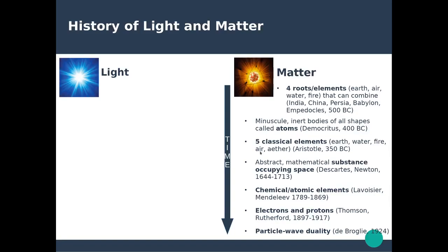Something worth mentioning is that those four elements — earth, water, fire and air — actually represent the four states of matter: earth is solids, water is liquid, air is gas and fire is plasma. Descartes later defined matter as an abstract mathematical substance that occupies space, and Newton attributed mechanical and physical properties to this substance.